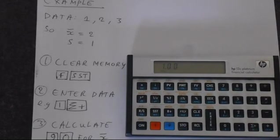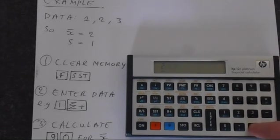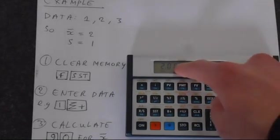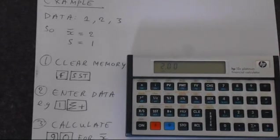So that's 1 saved into memory. Then if we press 2, and then press sigma plus, we get that in memory. This number that appears after you press sigma plus is simply counting. It's counting the number of entries that you put into the calculator.